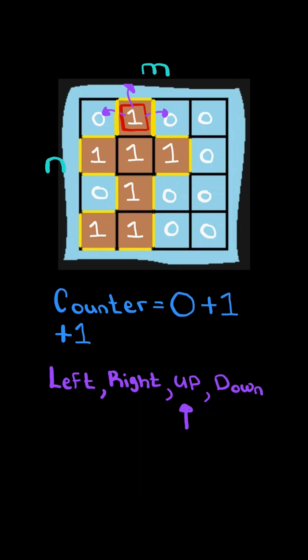Now if we move in a direction that is out of bounds, we also know there exists a perimeter, so we can update our counter. And the last possible scenario is that we move in a direction where the value is a one. In this case, there is no perimeter, so we do not update our counter.